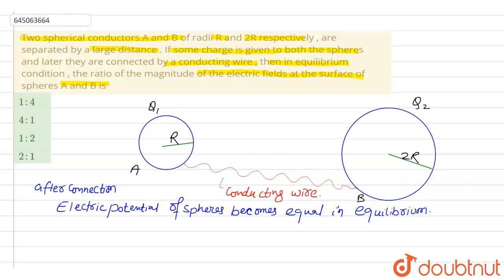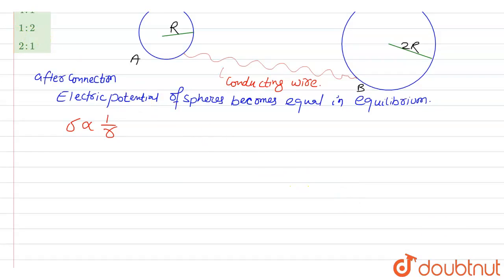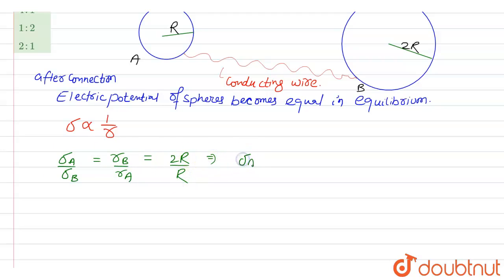Whenever the electric potential is the same, the surface charge density becomes inversely proportional to the radius of the sphere. So we can say that sigma A upon sigma B equals radius B upon radius A, which is 2R upon R. This implies sigma A upon sigma B equals 2 upon 1. Let this be expression 1.